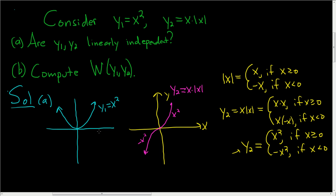We can see from the graph that these functions are not multiples of each other. In other words, I can't multiply x squared by a number to arrive at this function. So therefore, they are linearly independent. Remember, two functions are linearly dependent if they are multiples of each other. In this case, there's no number you can multiply y1 by to get the graph of y2. So that takes care of part A.